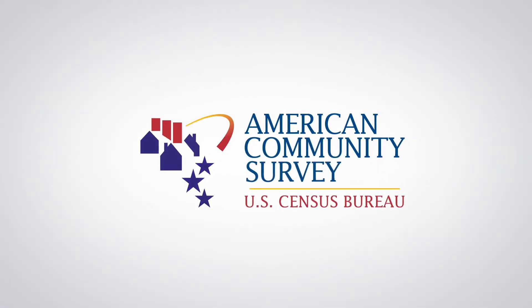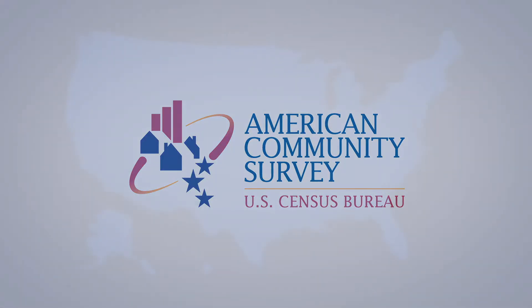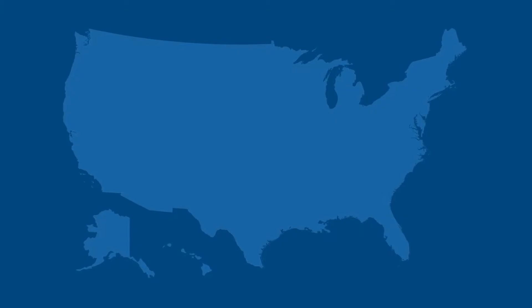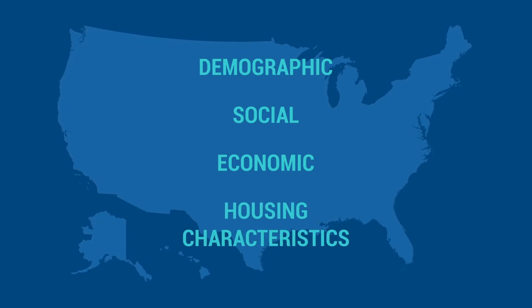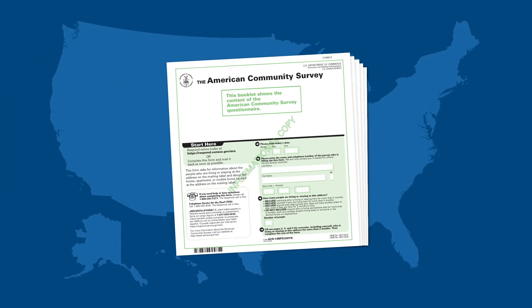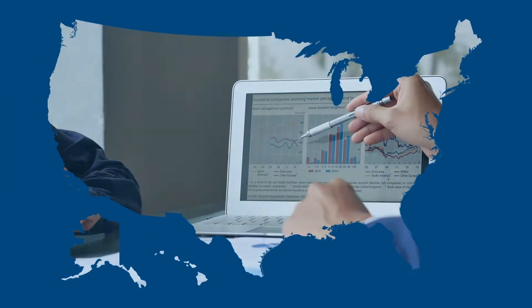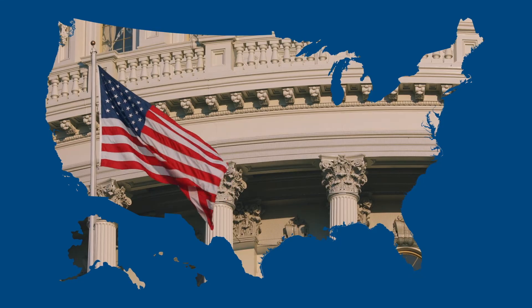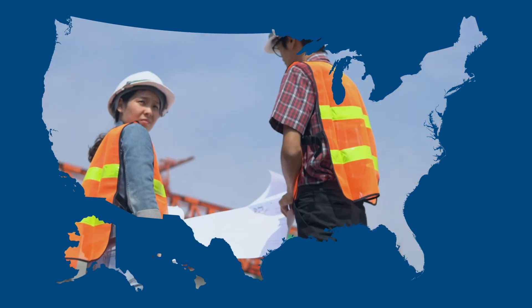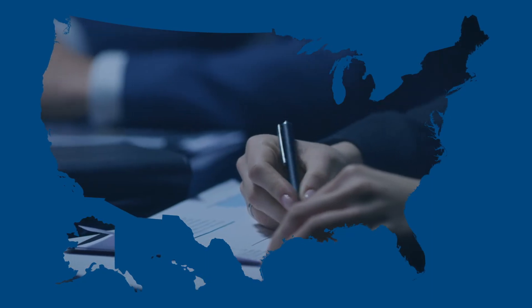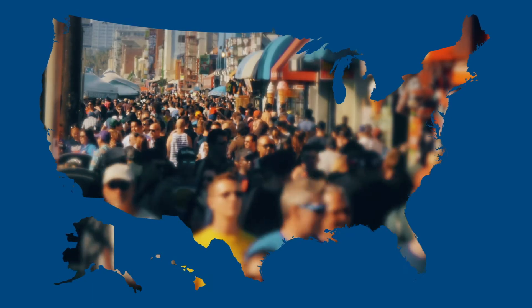The U.S. Census Bureau's American Community Survey, also known as the ACS, is a nationwide survey that collects information on the demographic, social, economic, and housing characteristics of the U.S. population. The ACS is the best annually updated source of local comparable data. Data analysts, government officials, businesses, and many others use these statistics for local planning and policy development, and to track the population's well-being.